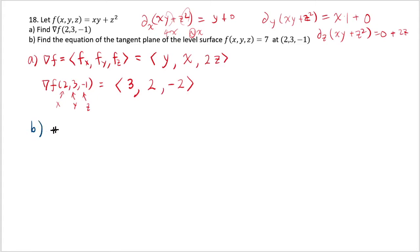Let's now tackle part b. What's the equation of the tangent plane of the level surface at 2, 3, negative 1? Well, first thing that you have to know that gradient is perpendicular to level curves or level surfaces.